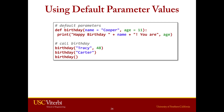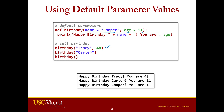Here we have a birthday function with two default parameters: name equals 'cooper' and age equals 11. The first time we call it with Tracy and 48 — Tracy goes to the name parameter, 48 goes to the age parameter — and we get that output. The second time we pass in only Carter with no number, so it uses the default age of 11. The third time we call it with no inputs at all, it uses the default name 'cooper' and the default age of 11.